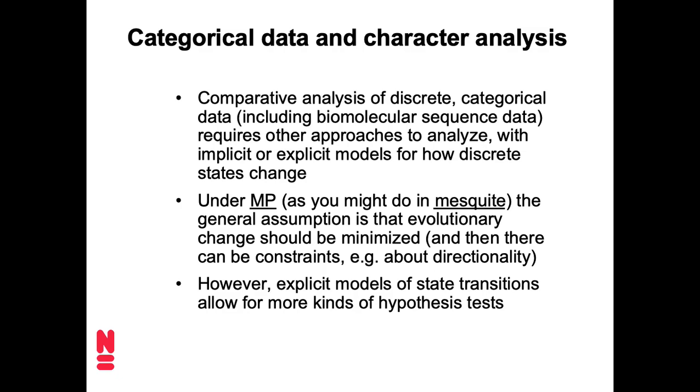So maximum parsimony is kind of a simple assumption about how discrete characters evolve. We basically assume that these changes are just super-duper rare. And so then we can plot these changes under maximum parsimony on a tree. And then we might do things such as look at where those changes are concentrated on a tree. Let's say if we have multiple discrete characters, so multiple columns in a character state matrix, then we might want to look at whether those coincide or are near each other on a tree, or maybe whether one precedes the other under maximum parsimony.